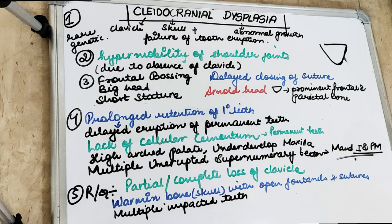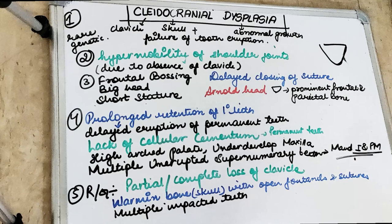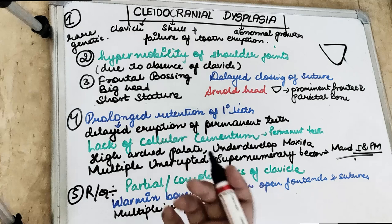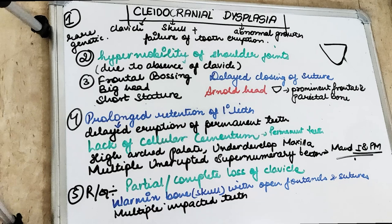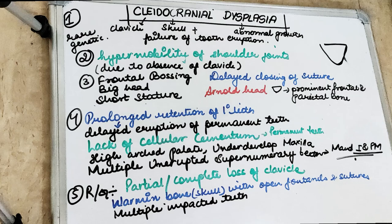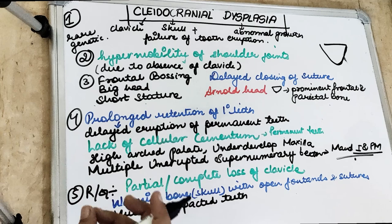Radiographically, we also see tortuous suture lines in the skull bone — the Wormian bones — with open fontanelles and open sutures. There are multiple unerupted, impacted teeth present, some of which may be deciduous teeth. The roots of the teeth are very thin and there is a lack of acellular cementum deposition.